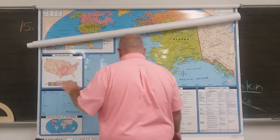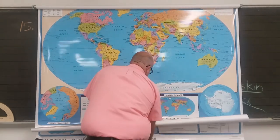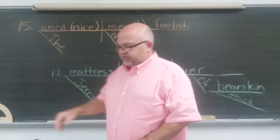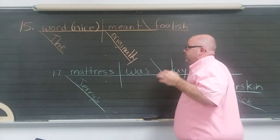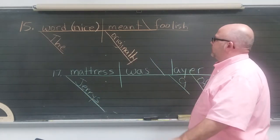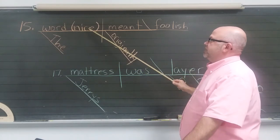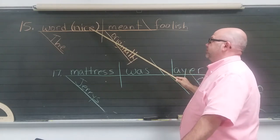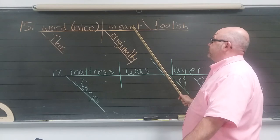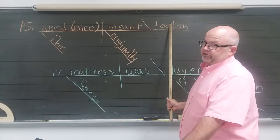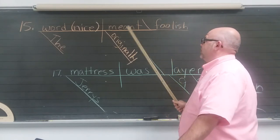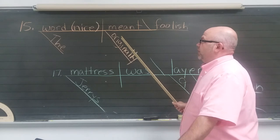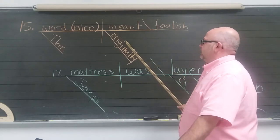Diagrams — check out these diagrams, numbers 15 and 17. This is kind of an interesting one. The word 'nice' in a positive — a renaming word. 'Word' and 'nice' are the same thing. The word 'nice' meant foolish. You can catch that as a predicate adjective. Meant foolish — foolish word, foolish nice, meant foolish originally. When did it mean that? Originally — back in the beginning. 'Originally' is an adverb meaning when.